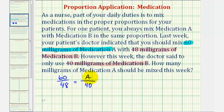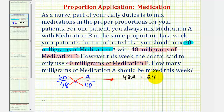Now, to solve for A, we can cross multiply, which means 48 times A must equal 60 times 40. So 48A must equal 60 times 40, which is 2,400. To solve for A, we divide both sides by 48. So A is equal to 2,400 divided by 48, which is equal to 50.